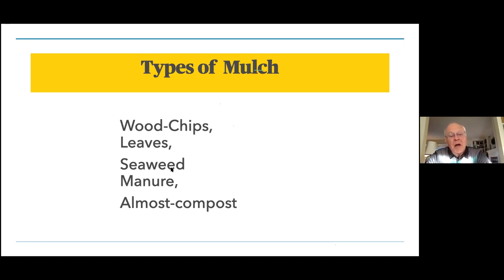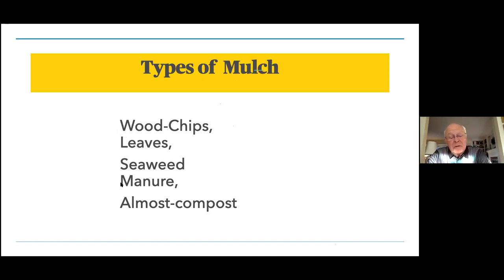Seaweed is a great mulch — I just put a sprinkling on it because it's heavy to carry. If you have a source of seaweed, use it. Manures — be careful; make sure they're well aged. Manures carry a lot of seeds, so make sure it's aged for at least a year, sometimes two or three, just to get rid of the weeds that are in it. Otherwise you'll be weeding all summer long. The soil food web — here's a great picture of it. You can see the worm and its castings, the mycorrhizal fungi and plant roots, and various fungi growing in the soil. We're feeding the soil food web through the mulch we use — that's how we're being organic.